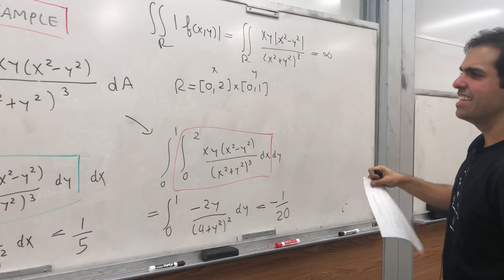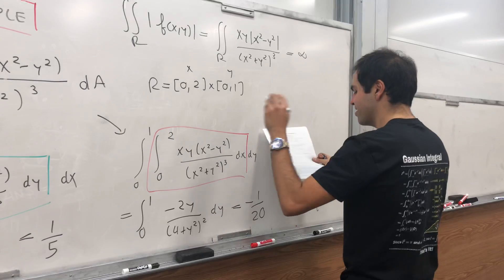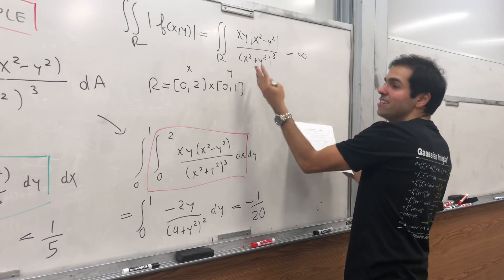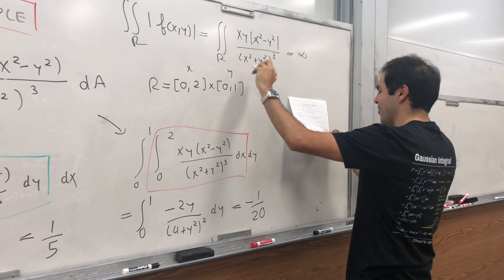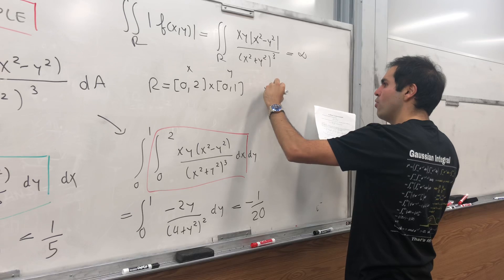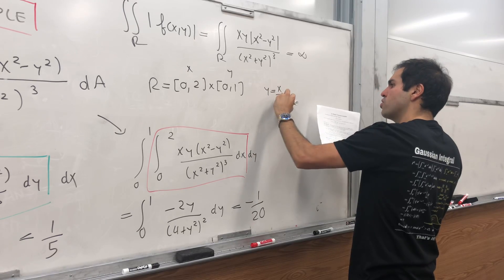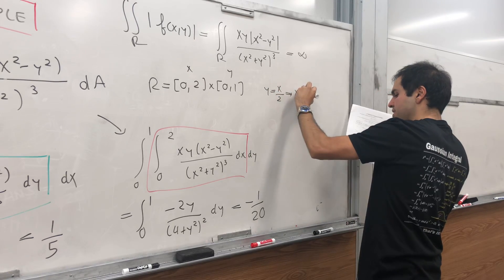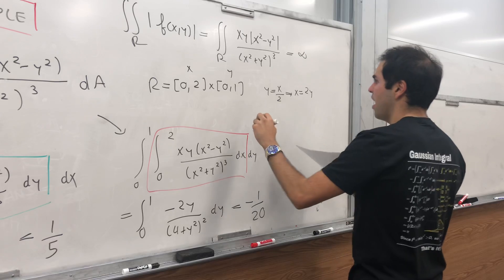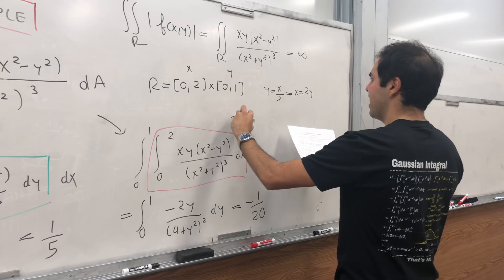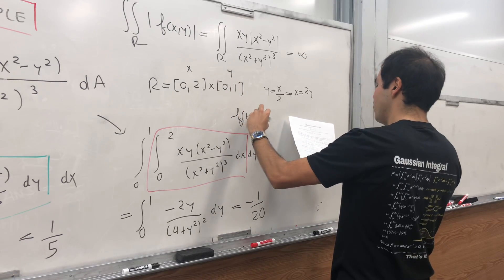And one way of seeing this is as follows. So the function basically blows up at a lot of points. Namely, look at the line y equals x over 2, so x equals 2y. And then in that case, on points of the form f(2t, t), the function is 6 over 125t squared, which goes to infinity,